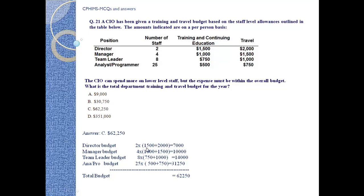Director budget: training and continuing education is $1,500 and travel is $2,000 per person. There are two directors, so we multiply — total comes to $7,000. Manager budget: training and education $1,000, travel $1,500. Multiply by 4 managers — total comes to $10,000.